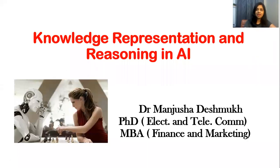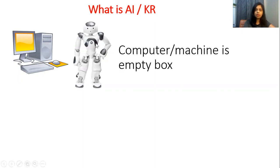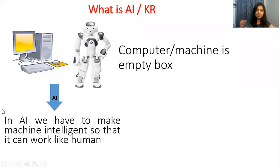Hello everyone. In this lecture I am going to explain knowledge representation and reasoning, which is a topic from artificial intelligence. You can see here in the picture a computer and a robot. This machine is an empty box and we want to make it intelligent. In artificial intelligence, we have to make machines intelligent so that they can work like humans.